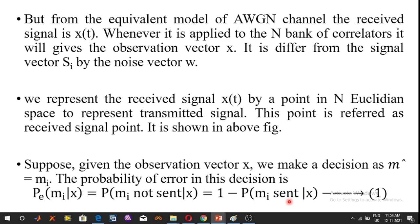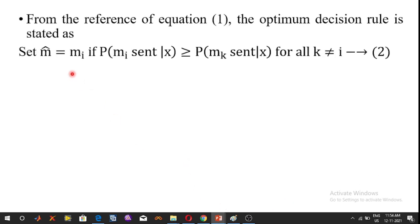From this reference equation, the optimum decision rule is stated as: set M̂ = Mi if the probability of Mi sent given X is greater than or equal to the probability of MK sent given X, for all values of K not equal to I.